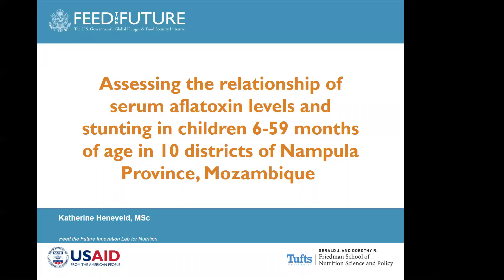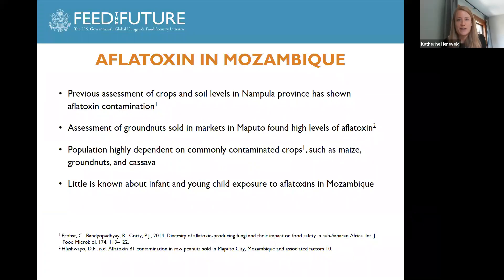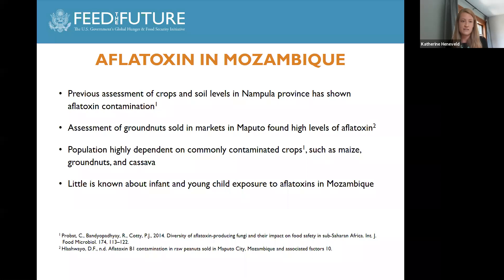Thanks, Patrick, and thank you everyone for joining us today. To provide a little background on why we conducted this study: there is very little known about infant and young child exposure to aflatoxins in Mozambique, and how such exposure is related to child growth. In Nampula province, where we conducted the study, over half of the children under five are stunted, and the population is highly dependent on crops commonly contaminated with aflatoxin, including maize, groundnuts, and cassava.